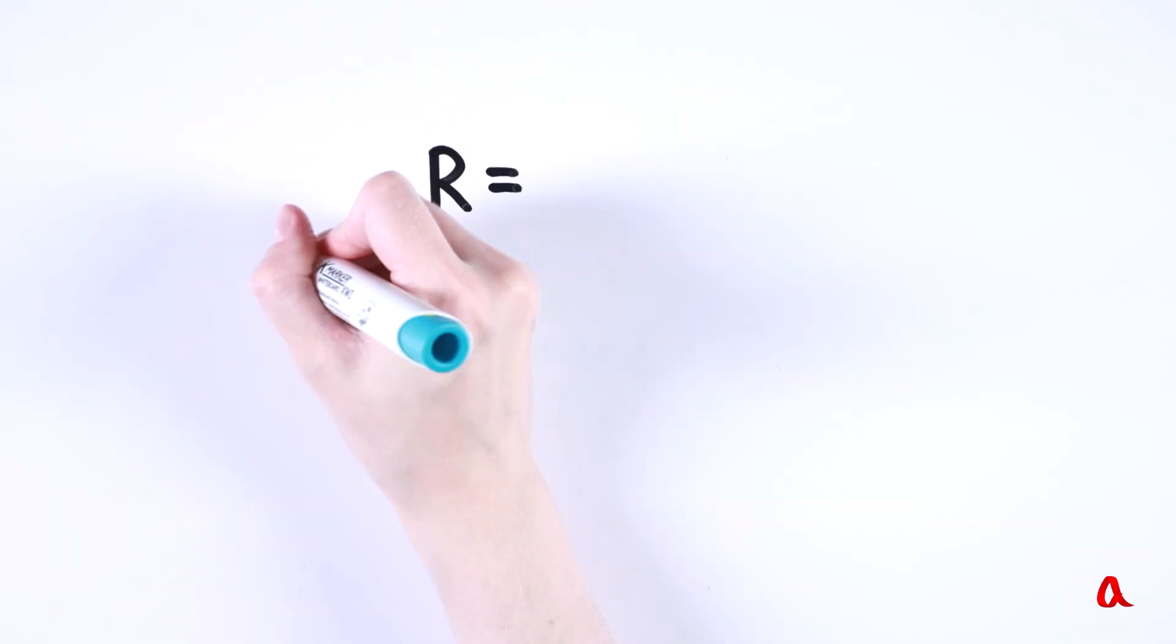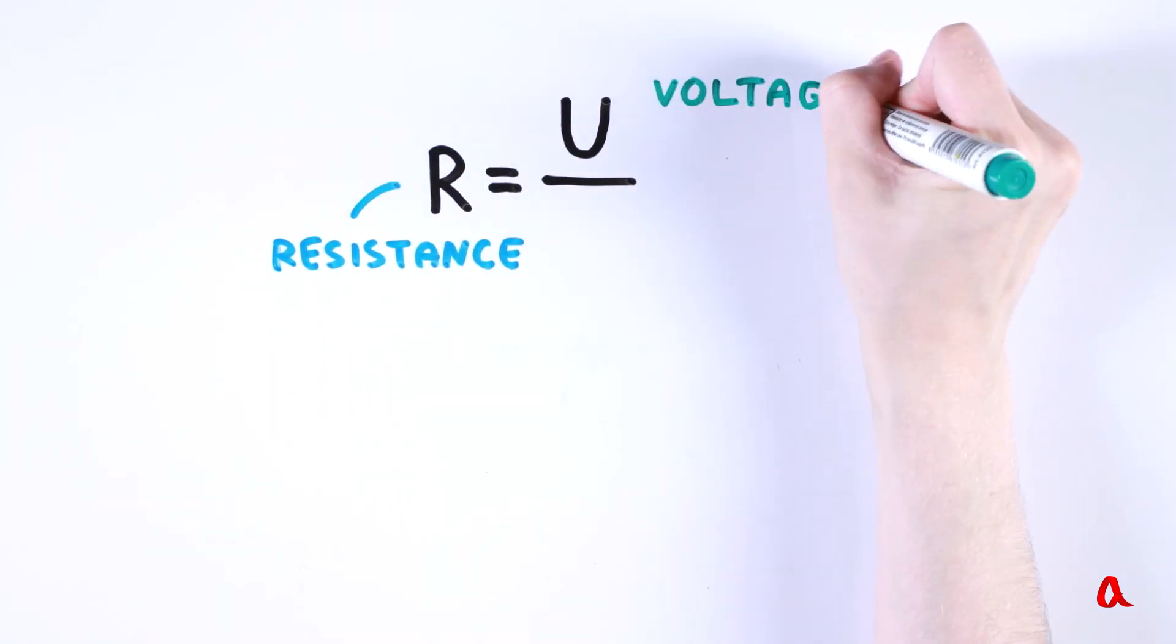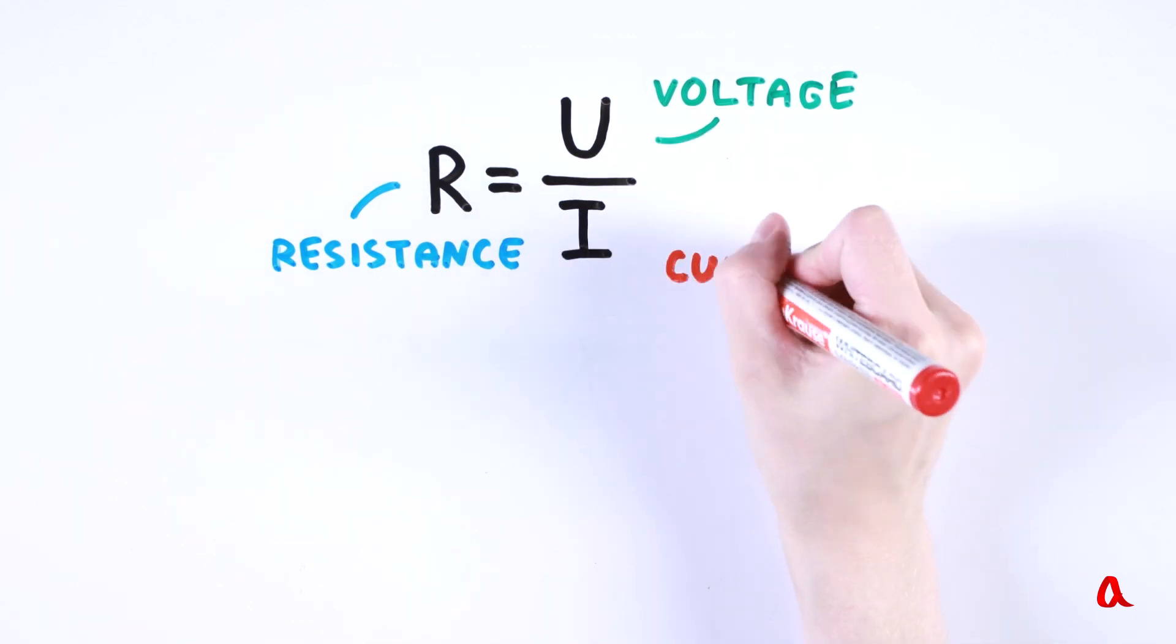Thus, the resistance of a conductor R is the ratio of the voltage U applied to the ends of the conductor to the current I flowing through it.